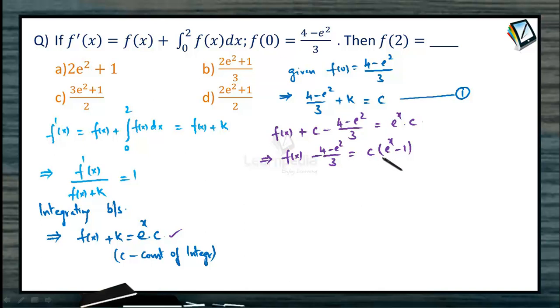We got another relation involving f of x, but now the constant of integration is the only participating factor. What happens if we integrate this between 0 to 2? What will happen to this equation?